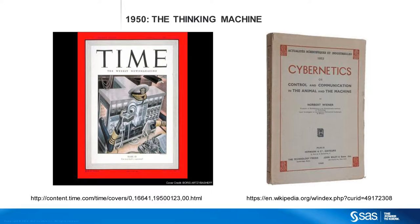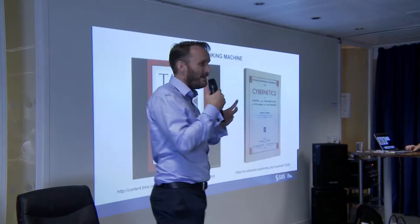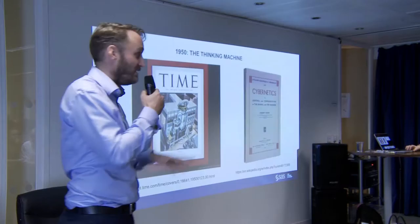Machine learning and artificial intelligence is being talked about like it's a brand new thing. SAS has been around for 40 years doing primarily the same thing — taking data, learning from that data, and making a decision. And if we look back to the 1950s, people have been talking about building these automated decisions.